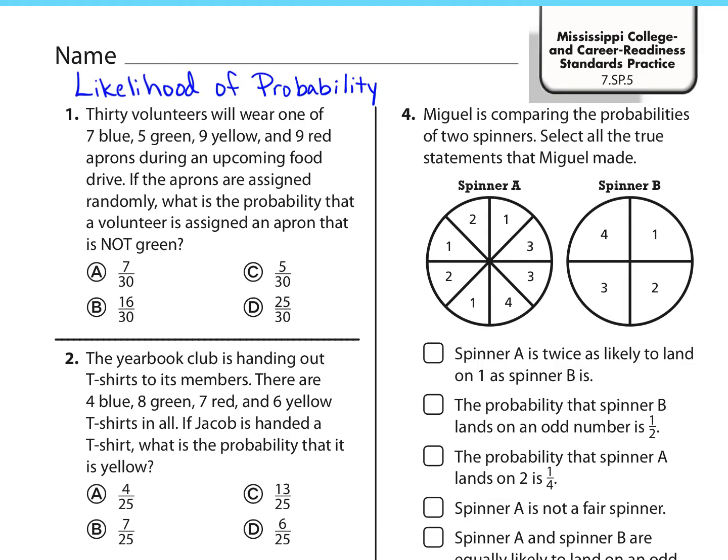Standard 7 SP5 through SP8 are about probability. So 7 SP5 specifically is about the likelihood of probability. And these are all going to be numbers, by the way, that are between 0 and 1, where 0 means it's impossible to happen, 1 means it will happen.